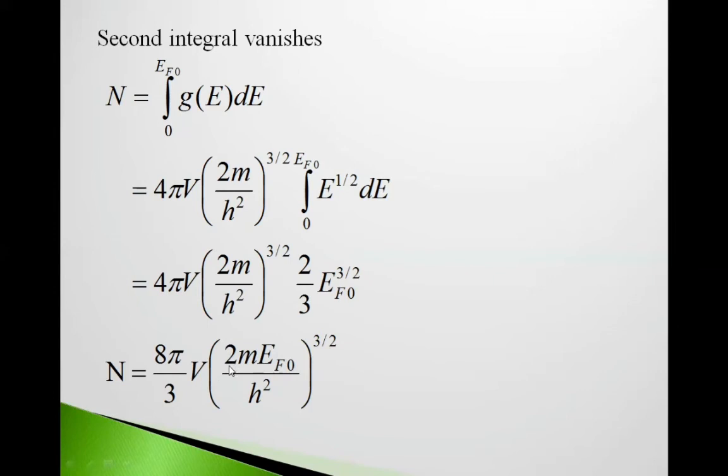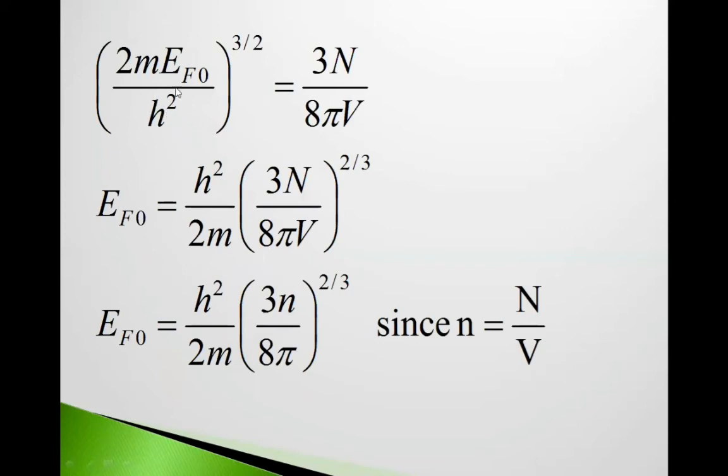From this we can write (2mEF0/ℏ²)^(3/2) = 3N/(8πV), giving EF0 = (ℏ²/2m)(3N/8πV)^(2/3) = (ℏ²/2m)(3n/8π)^(2/3), where n = N/V is the electron density. So this is the value of EF0, Fermi energy at 0 degree Kelvin.